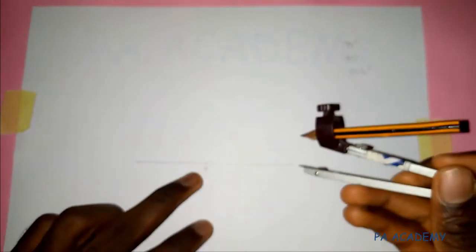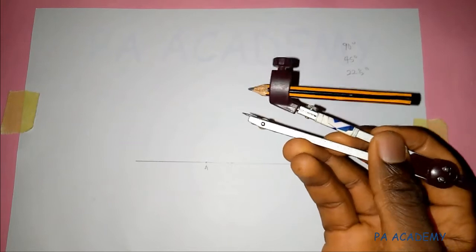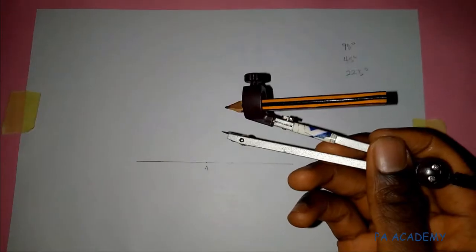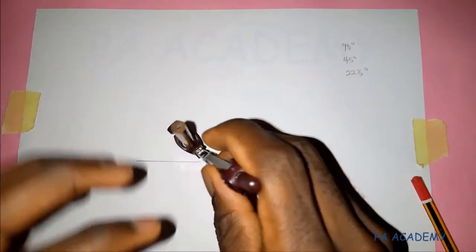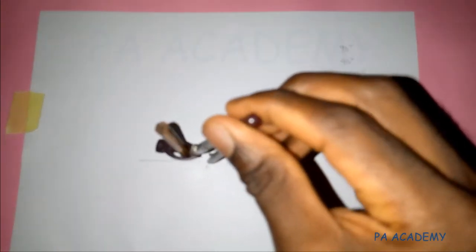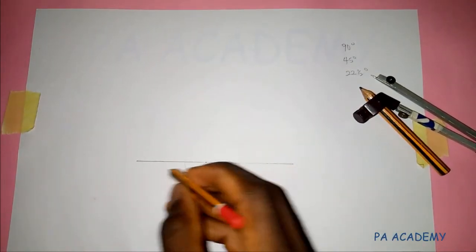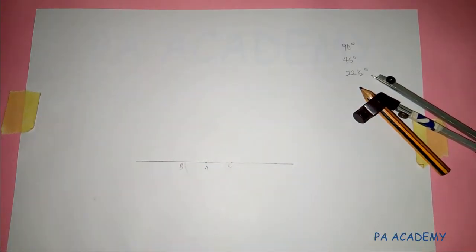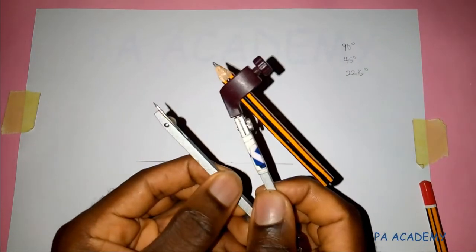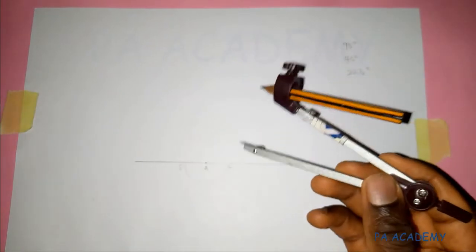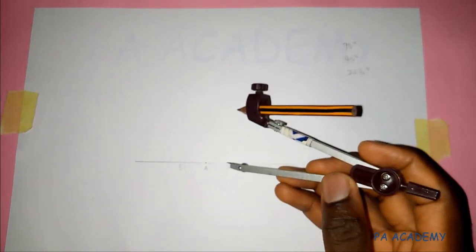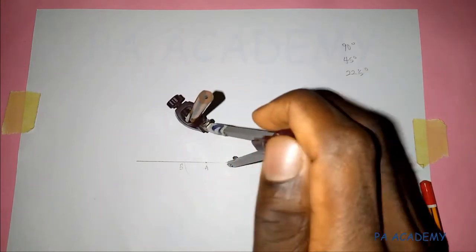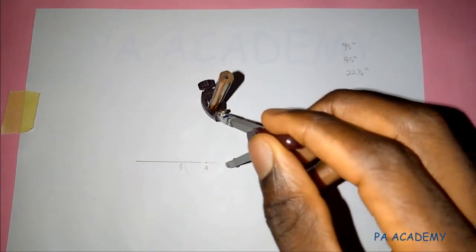So the first thing we want to construct is angle 90. From point A, you pick your compass at a very small length and place it at point A. Then you draw a semi-circle downwards. Let's call the two points where it touches the straight line point B and point C. Now pick your compass again and increase the length to any convenient length. With this length, put it on point C and draw an arc.